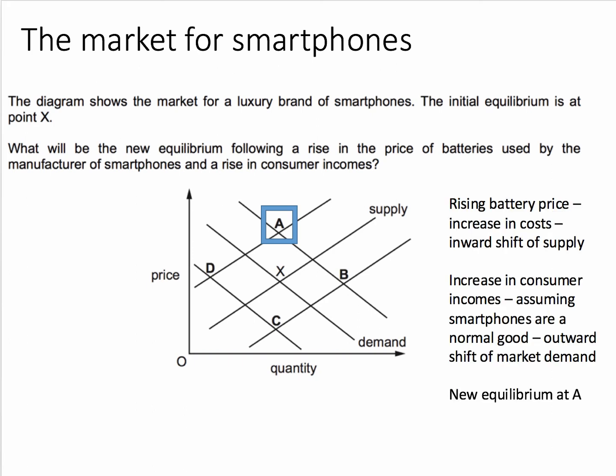The increase in the battery price is an increase in the variable cost of manufacture. That's going to cause an inward shift of supply. The increase in consumer incomes — we can assume smartphones are a normal good because we're told it's a luxury brand of smartphones. So therefore that will cause the demand curve to shift out to the right.